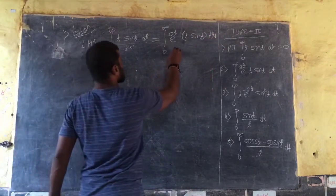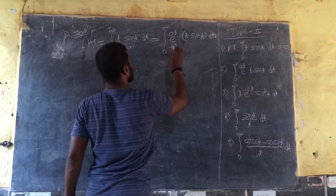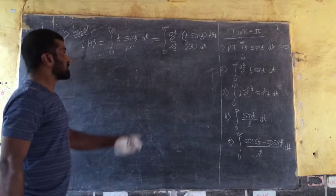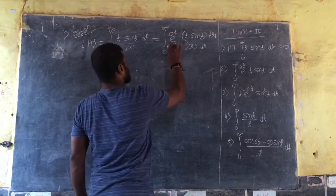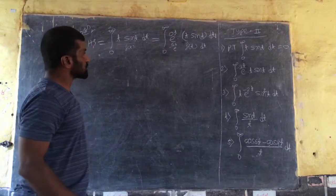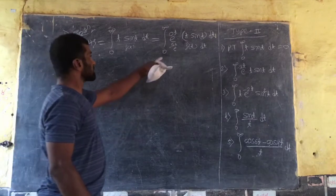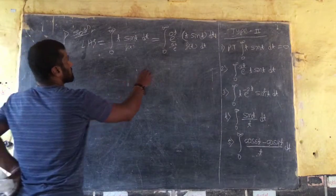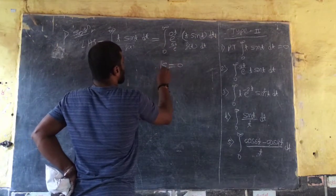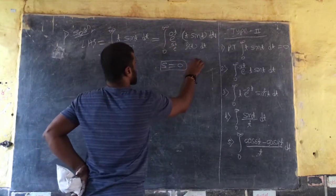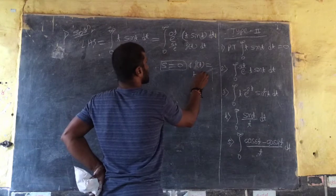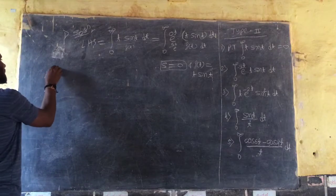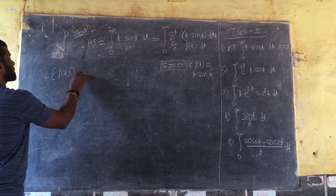This is exactly in the form of the integral from 0 to infinity of e^(−st)·f(t) dt. By comparing, s is equal to 0 and f(t) is equal to t·sin(t). So I can apply the Laplace definition: L{f(t)} = integral from 0 to infinity of e^(−st)·f(t) dt.